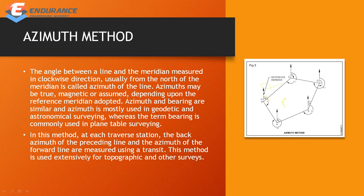The azimuth and bearing are similar concepts, but the azimuth method is most commonly used in geodetic and astronomical surveying, whereas the term bearing is also commonly used in plain table surveying. In the azimuth method, the back azimuth of the preceding line and the azimuth of the forward line are measured using a transit.